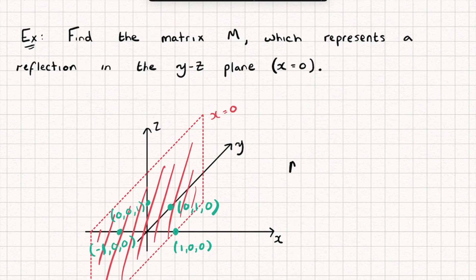And so my matrix M is going to be (-1,0,0), (0,1,0) and (0,0,1).